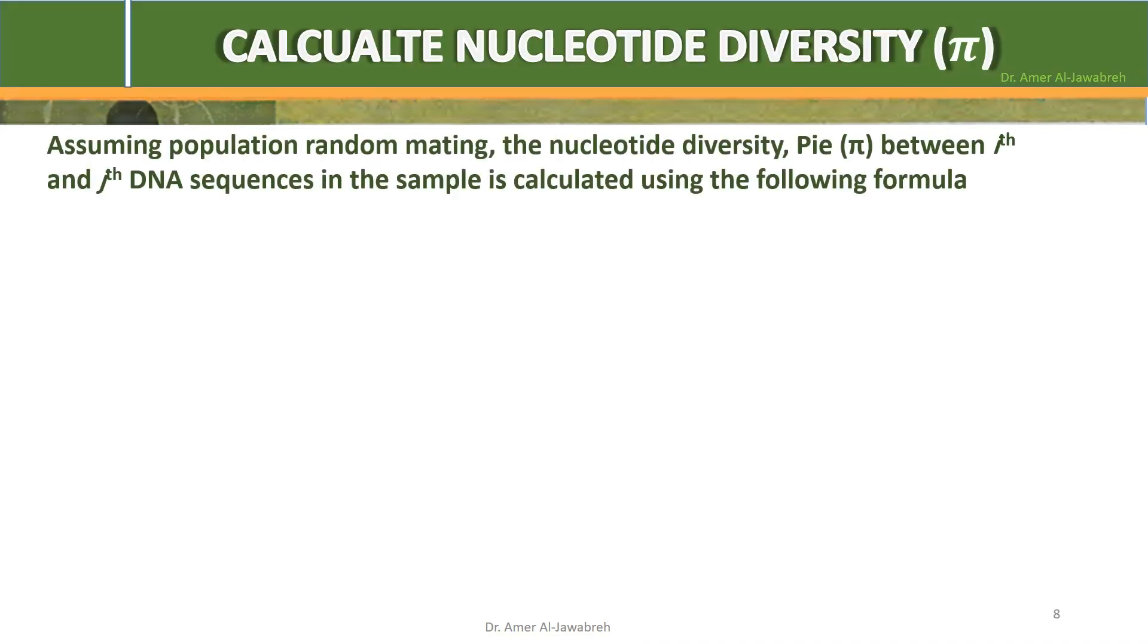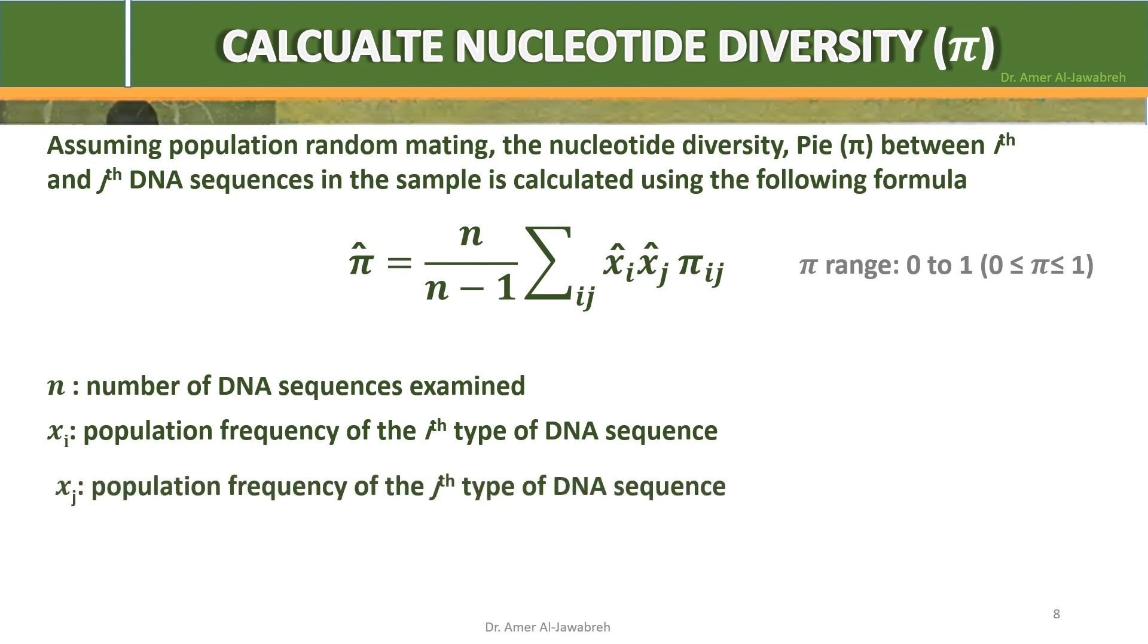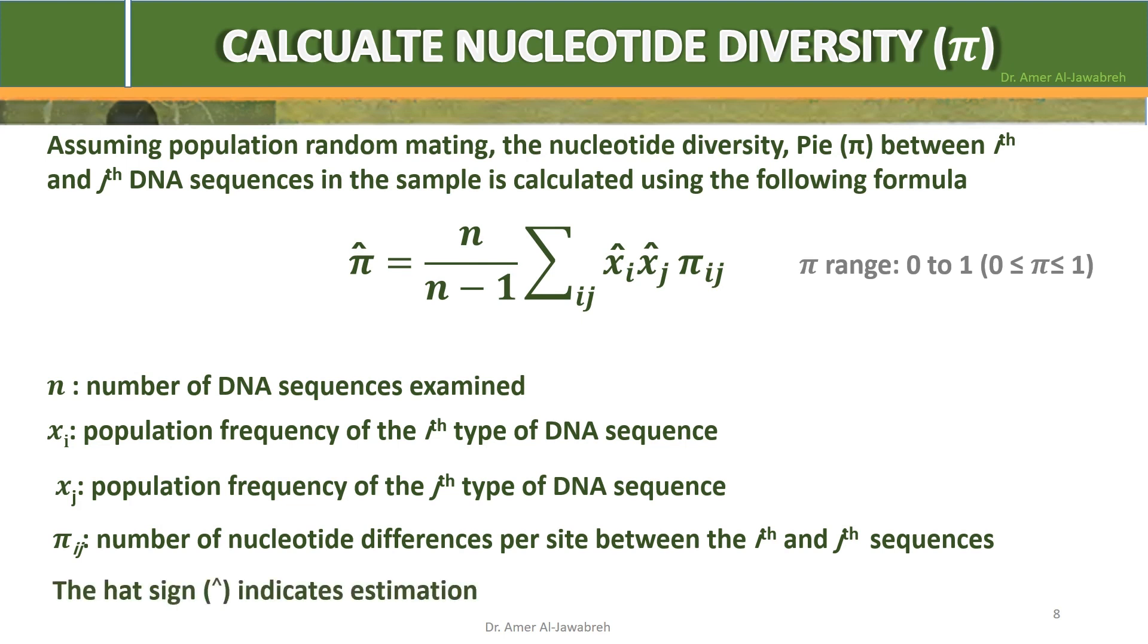Calculating observed genetic diversity pi. Assuming population random mating, the nucleotide diversity pi between i-th and j-th DNA sequences in the sample is calculated using the following formula: Pi hat equals n over n minus 1 sum for X i hat X j hat pi i j between i and j. N is the number of DNA sequences examined, X i is the population frequency of i-th type of DNA sequence, X j is the population frequency of j-th type of DNA sequence, and Pi i-j is the number of nucleotide differences per site between the i-th and j-th sequences. The hat sign indicates estimation.